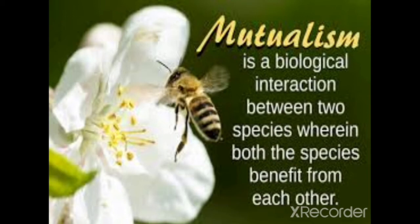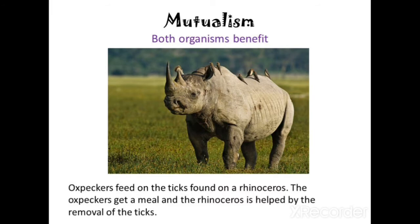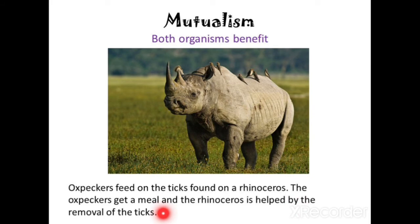When bees carry pollen grains to other flowers, they help in pollination and a new plant grows — so both are benefited. Similarly, oxpeckers are birds that feed on ticks found on rhinoceroses. The oxpecker gets a meal, and the rhinoceros benefits because the ticks that were infecting it are removed.